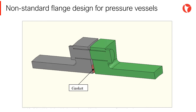As it was seen in the previous image and in the one shown on the screen, the location of the gasket in the flange plays a fundamental role in the design of these elements, since it determines the magnitude of the bending moments to be absorbed.